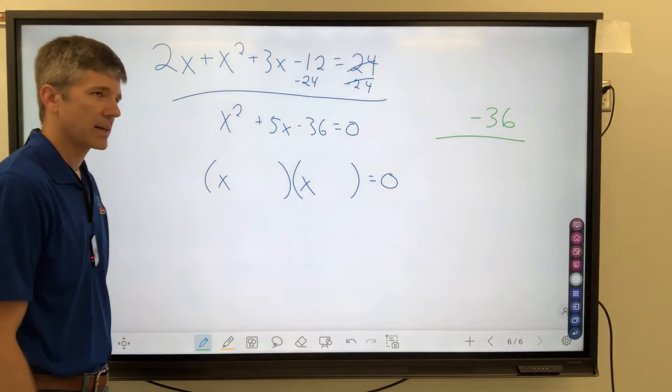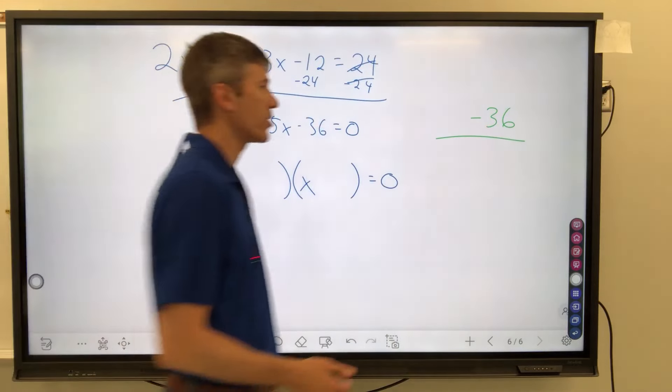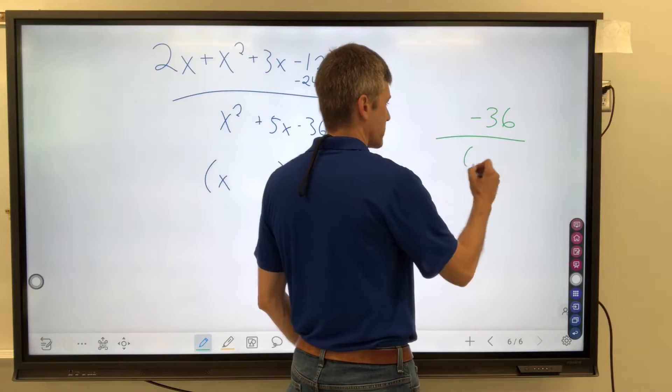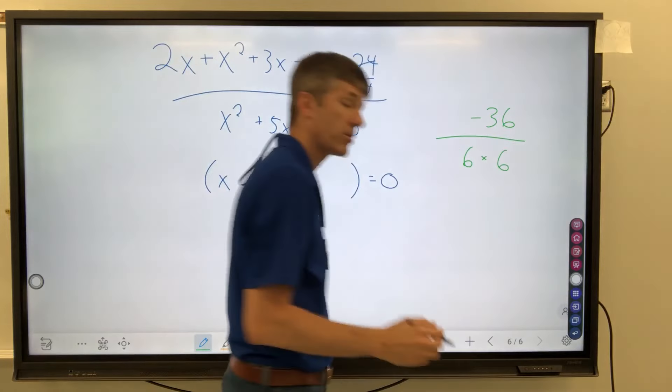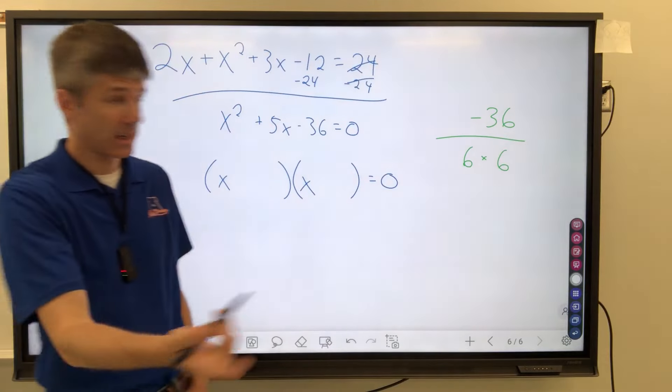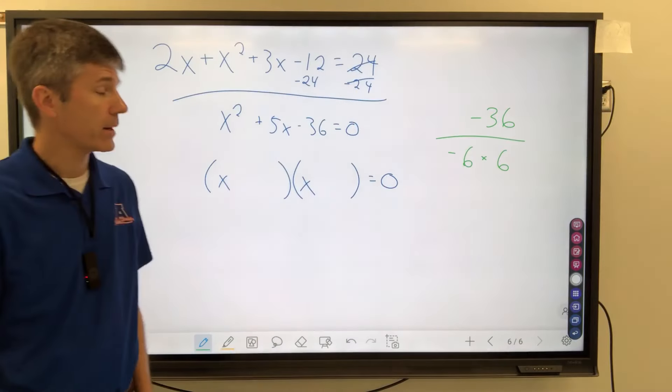x times x would give me x squared. I need two numbers that multiply to give me negative 36, and I'm going to list some options over here. Maybe you learned it this way. Maybe you didn't. I don't know. Negative 36.